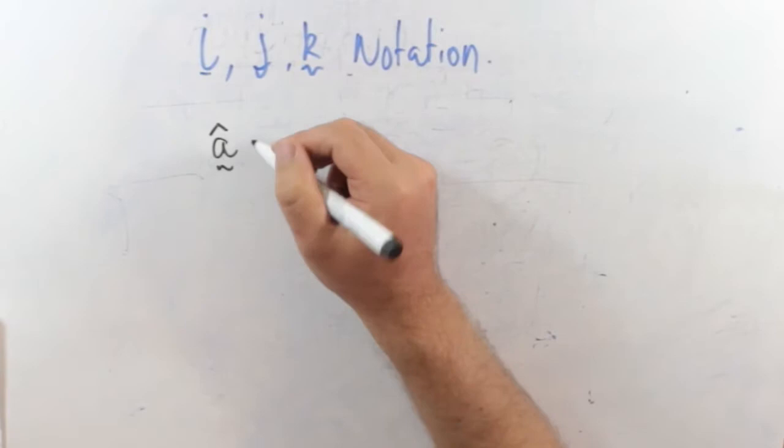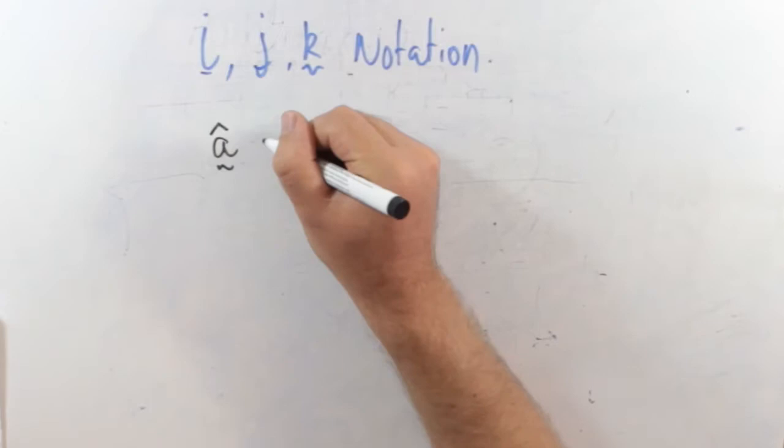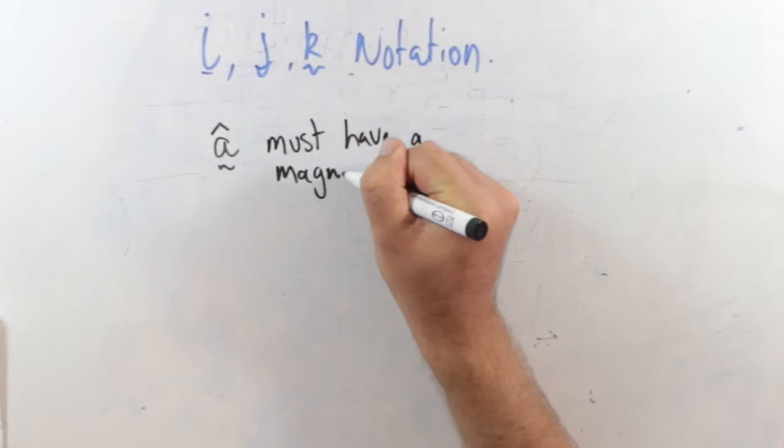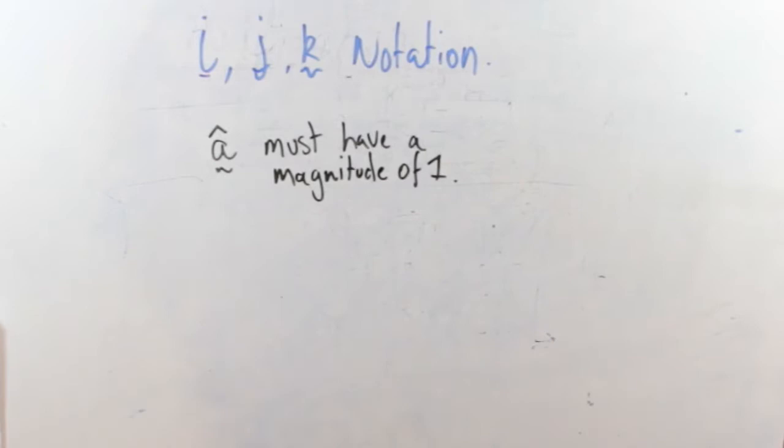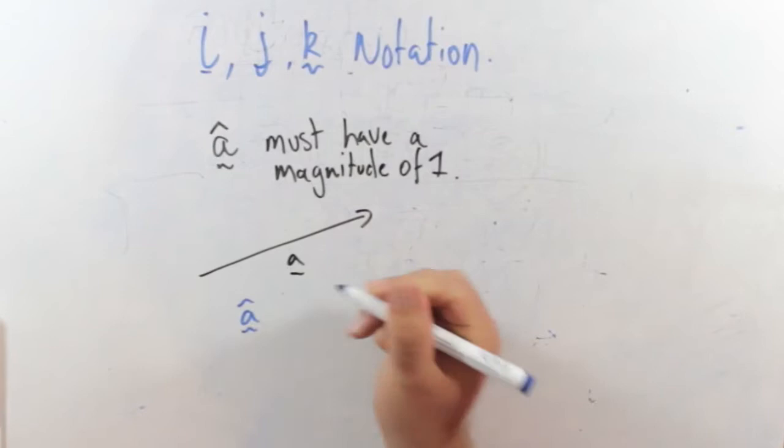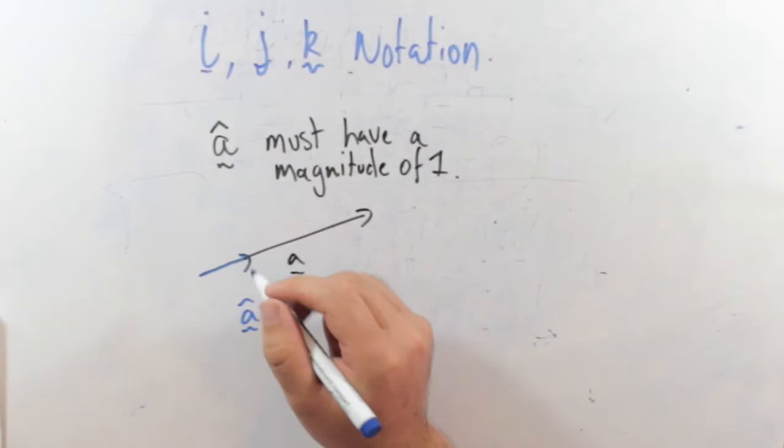So we've got vector a hat, so that means it must have, it's a unit vector, must have a magnitude of one. So if you're drawing a, a looks like this, so a unit vector in the direction of a, or we want to find a hat, we just take of unit length one in the same direction. So a hat might be that one.